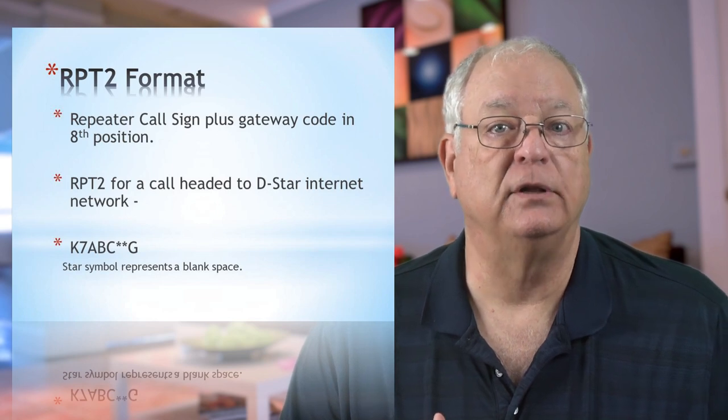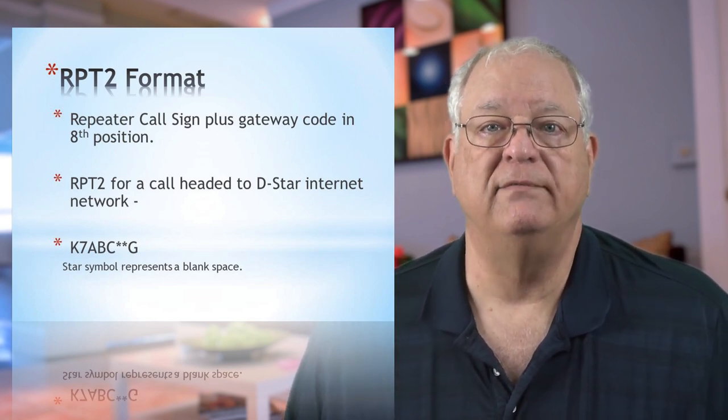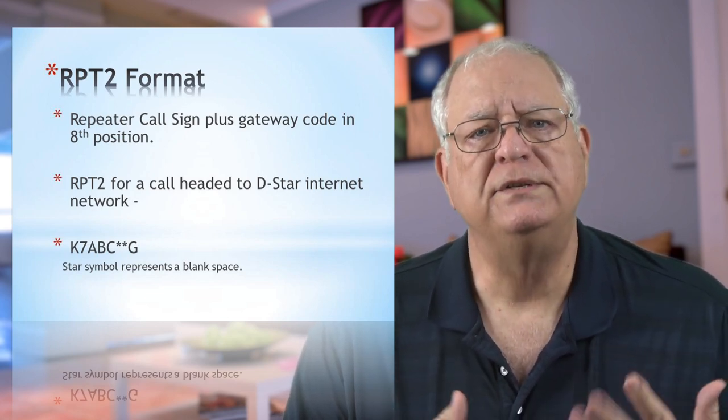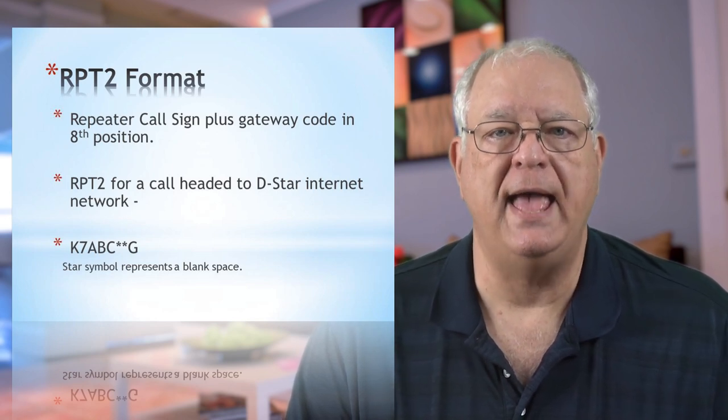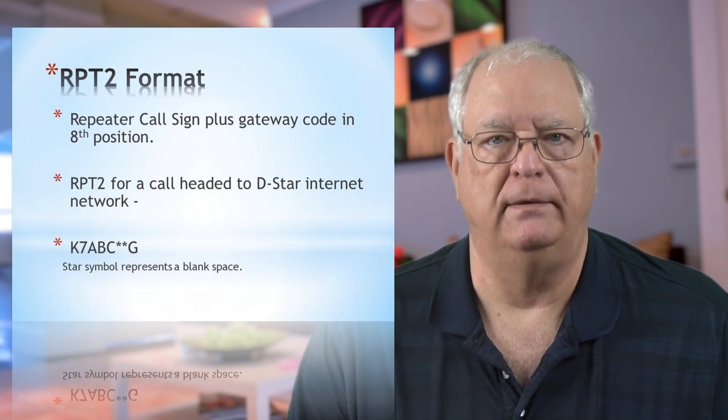When setting RPT2, you'll use a similar 8-character label. In our example, if we set K7ABC to be RPT1, we'd set RPT2 to be K7ABC space space G. The G stands for Gateway. In the newer radios, this setting is sometimes hidden or assumed when other choices such as Gateway CQ or Use Reflector are used. If you're linking to another repeater or reflector, your radio will include a G in RPT2 space 8. If you are hearing traffic on a distant repeater or reflector but no one answers you when you speak, you probably have chosen a setting where the G is not in R2 position 8.